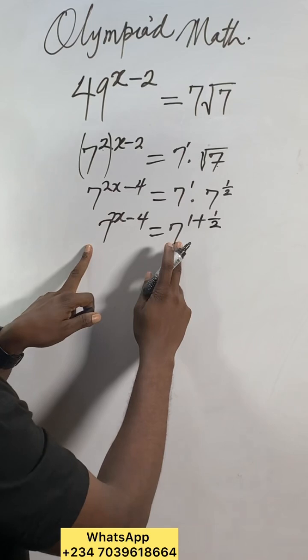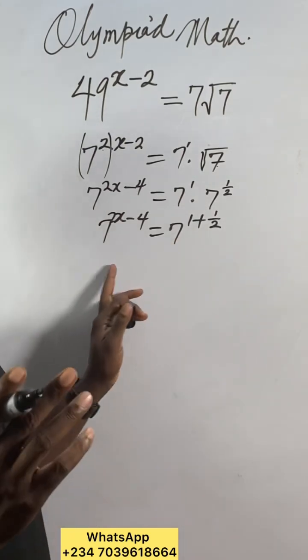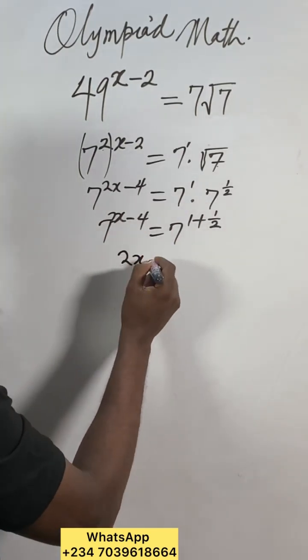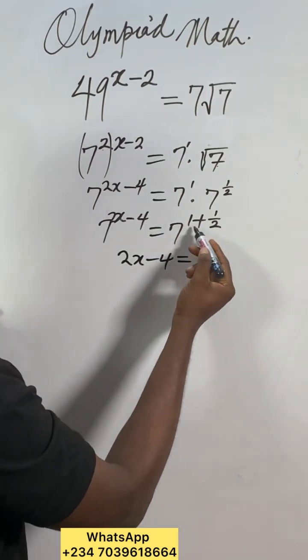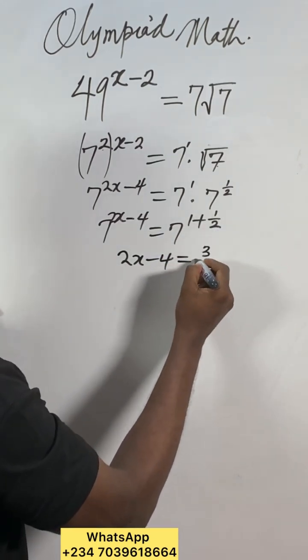Since the bases are equal, we will equate the powers. So I can get 2x minus 4 equal to 1 plus 1 over 2, which gives us 3 over 2.